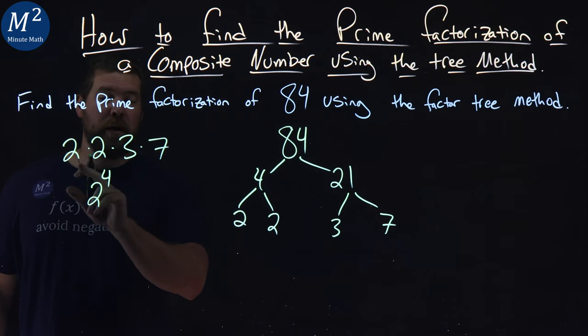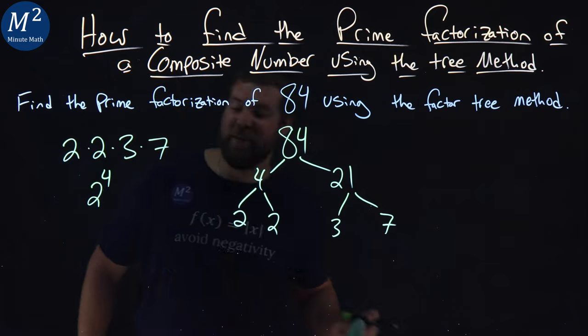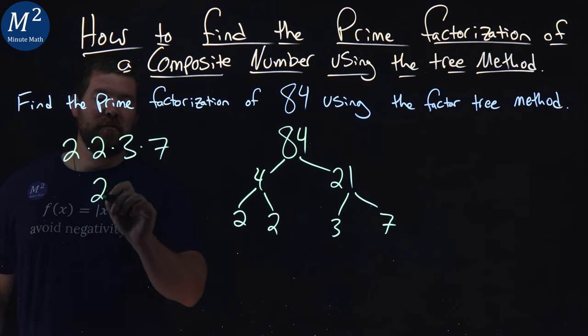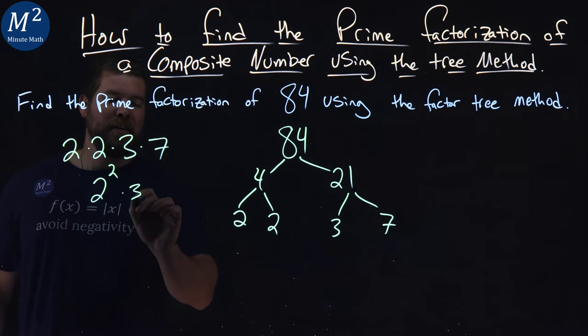We also wrote this as 2 to the fourth power. Not 2 to the fourth. 2 squared, Sean. 2 squared times 3 times 7.